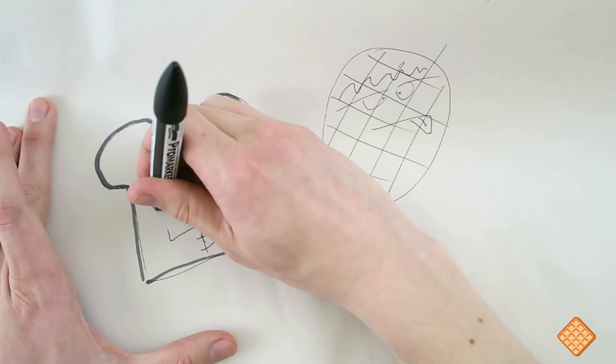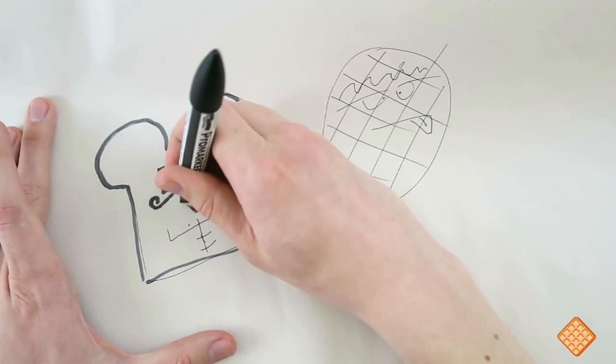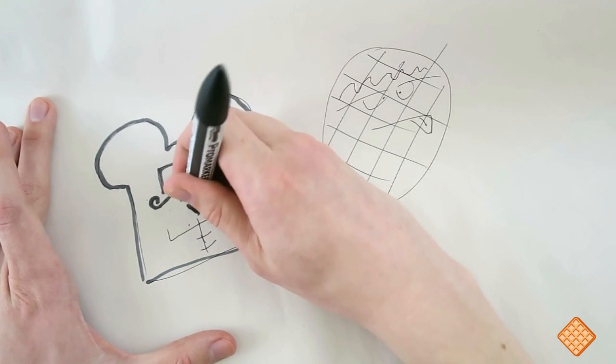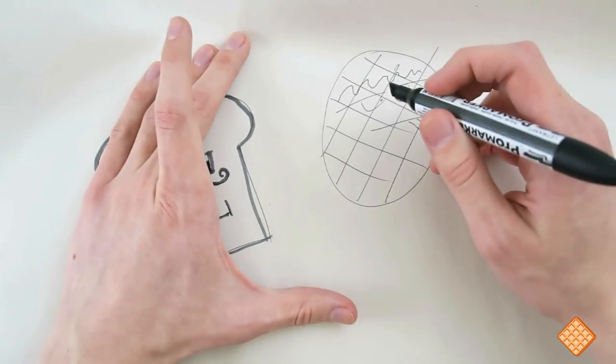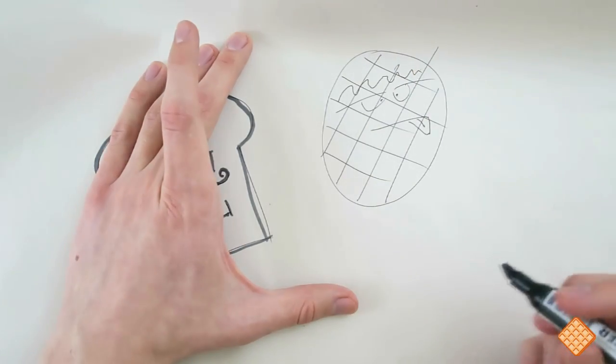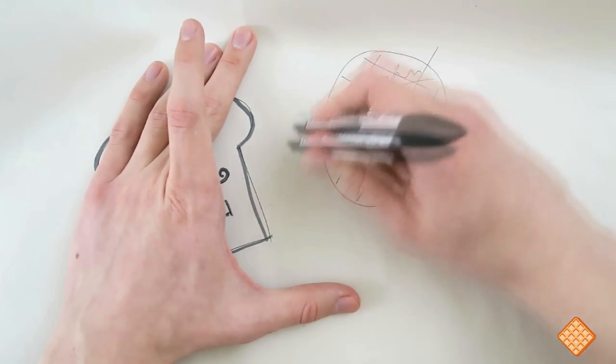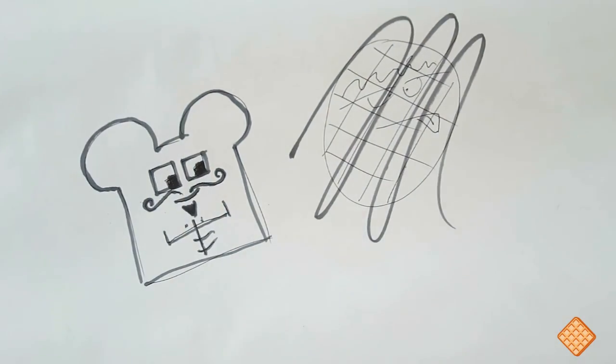And then the mustache. Excellent. And the mouth. And the goatee. We can also use line art to fix mistakes, but with Mademoiselle Ruffins, that is a very difficult thing to do. Oh, there. Much better.